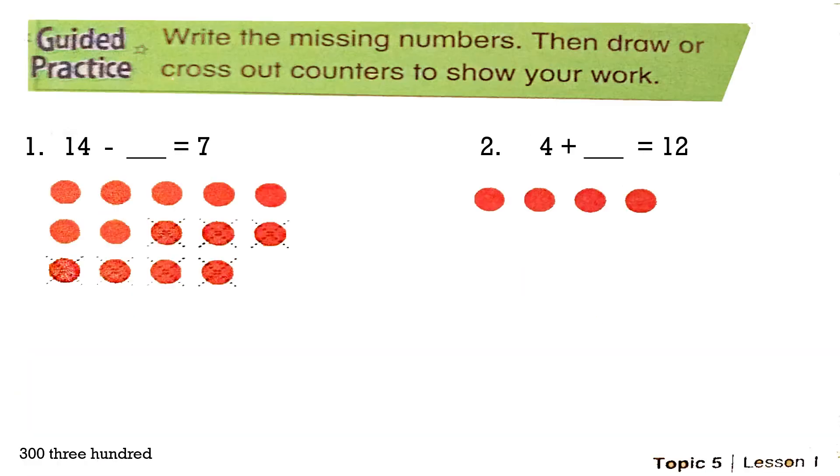12 minus an unknown number equals 3. Now, look with me at the guided practice. Write the missing numbers, then draw or cross out counters to show your work.